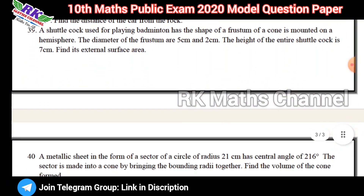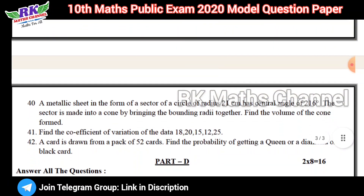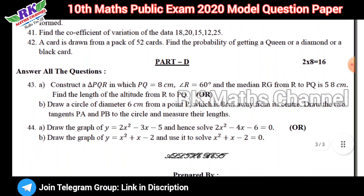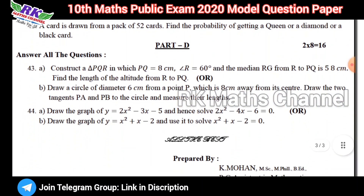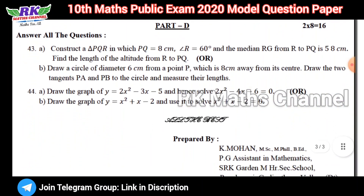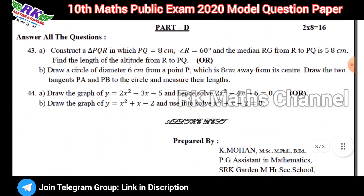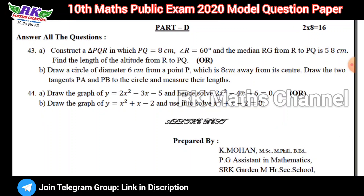Question number 42 is compulsory. The last section includes a graph and geometry. The graph is a graph of variation.